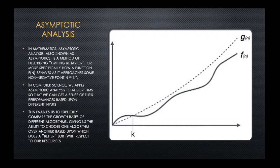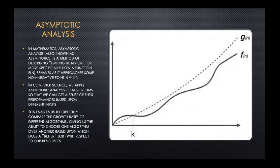So, asymptotic analysis. In mathematics, asymptotic analysis — also known as asymptotics — is a method of describing the limiting behavior of a function, or more specifically how a function behaves as it approaches some point N. When we're talking about algorithms, we're going to take N to be non-negative — it could be zero or positive — whereas in mathematics it could be any real number.